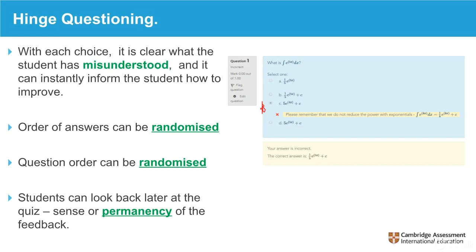One thing I like about online platforms — this is where the idea of enhancement comes in — is when giving questions, the question order can be randomized. With 30 people in a room or online, each student gets questions in a different order. If you had the time, you could create five different types of each question so every student could have individualized assessments. You can also change the order of the answers so instead of A, B, C, D they can be in a different order, which helps with some forms of assessment.